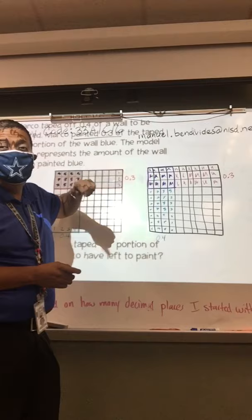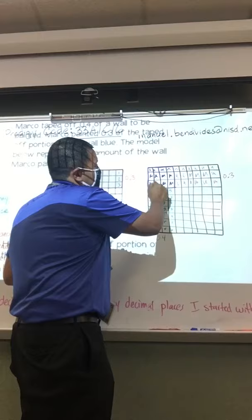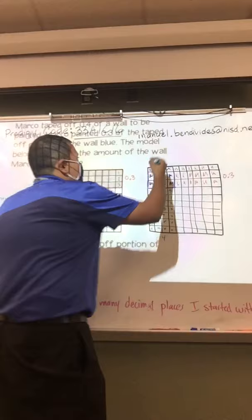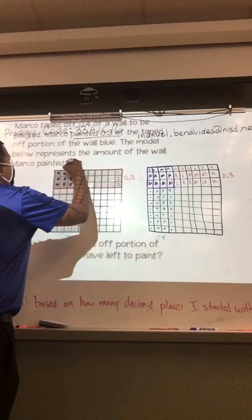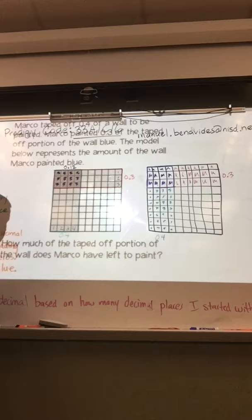This section right here is what Marco has not painted. We determined just by counting: one, two, three, four, five, six, seven, eight, nine, ten, eleven, twelve. Not twelve, but twelve what? Hundredths. This is our answer right here. Here's my answer, and it should be twelve hundredths.